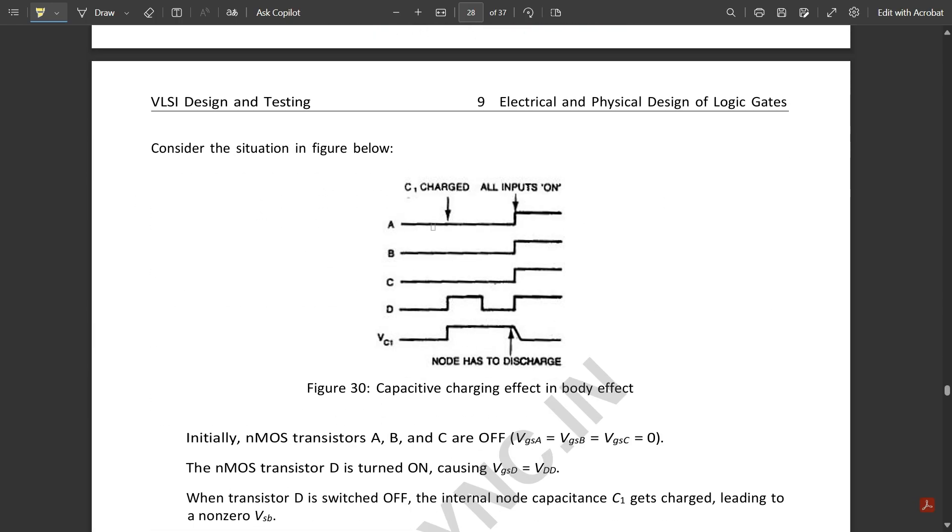Consider the situation below showing capacitive charging effect in body effect. We have four inputs A, B, C, D and the voltage that is responsible for charging. When C1 is charged, all the inputs are on.